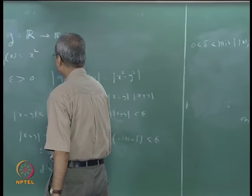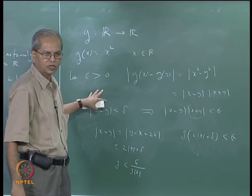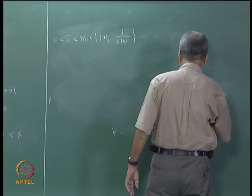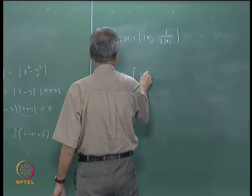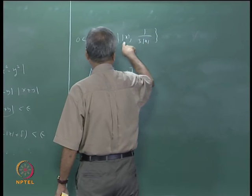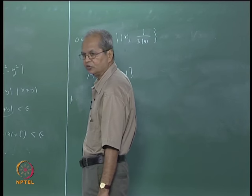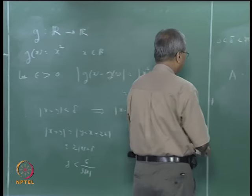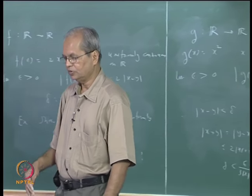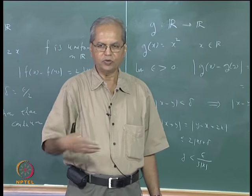On the other hand, suppose I take A as the closed bounded interval [0,1] instead of the whole of R. Then I can take the minimum value of delta over all x in that interval to find a delta that works for all elements. So g(x) = x² is not uniformly continuous on R, but it is uniformly continuous on bounded sets like [0,1]. Uniform continuity depends on the set — a function may be uniformly continuous on some set A but not on another set B.